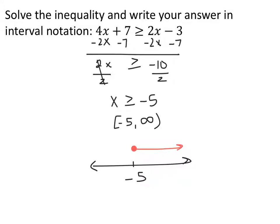Subtract 2x from both sides and subtract 7 from both sides to combine like terms, giving 2x ≥ -10. Divide both sides by 2, and you get x ≥ -5, or in interval notation [-5, +∞). On the graph, put a closed circle at negative 5 with the arrow going off towards positive infinity.